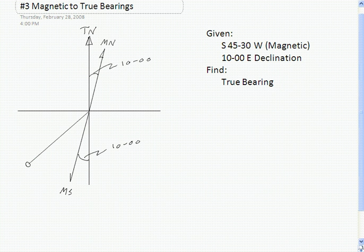Well, the south 45-30 west, the magnetic bearing, is measured from magnetic south. So this angle is 45-30.